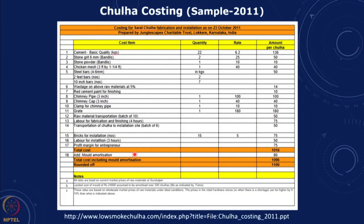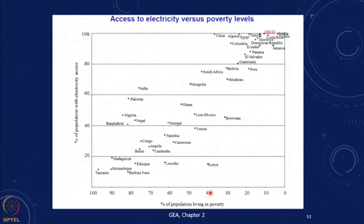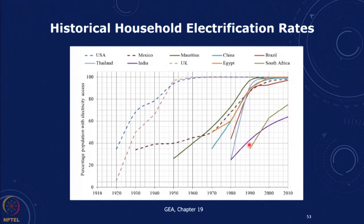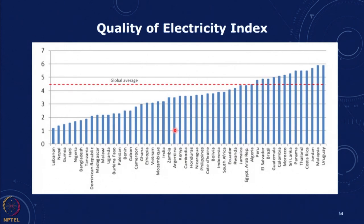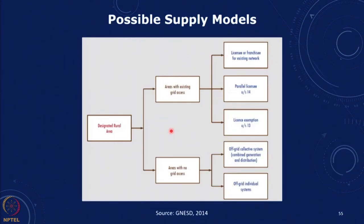The estimated cost for a low-smoke chula is a couple of thousand rupees. In general, access to electricity is clearly linked with poverty — as seen in the global energy assessment, many Latin American and African countries with high poverty levels also have less electricity access. India is now nearing 100 percent in terms of village connections and moving toward 70–80 percent in terms of household connections.